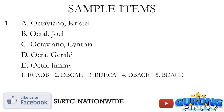Sample item number one. You have A to E: Octaviano Cristel, Octa Joel, Octaviano Cynthia, Octa Gerald, and Octo Jimmy. Kung inyo po mapapansin, ang ating items A, B, C, D, at E ay pare-pareho lamang yung format — lahat sila ay just last name plus first name. Hindi masyadong mahirap i-alphabetize kasi isa lang yung format natin.